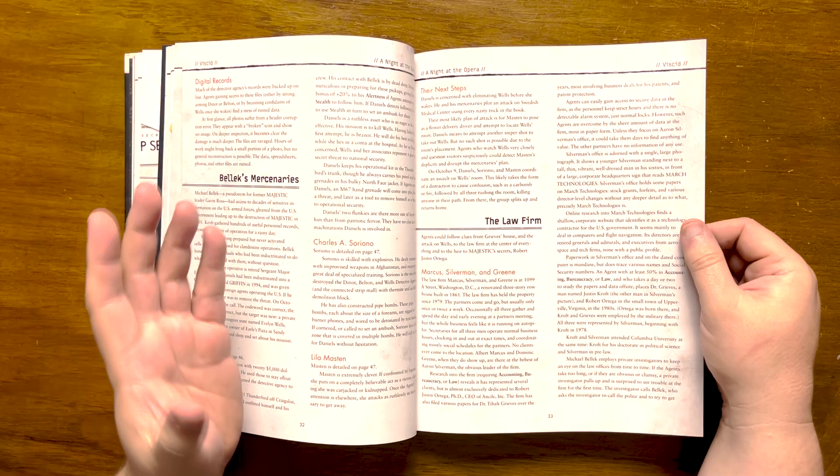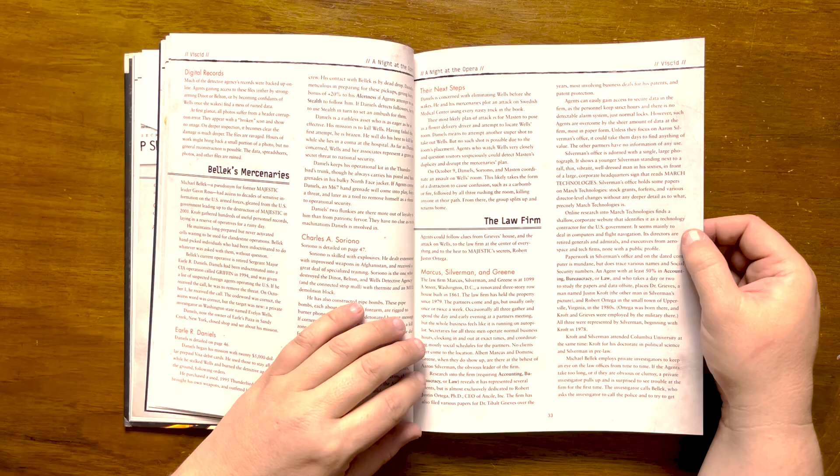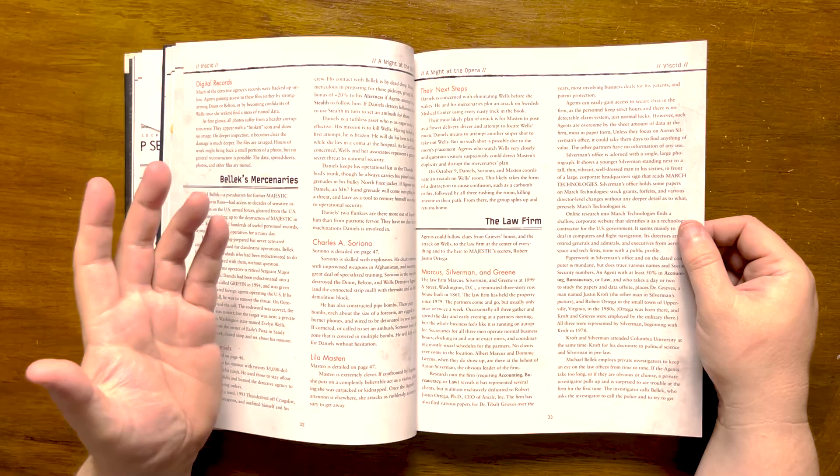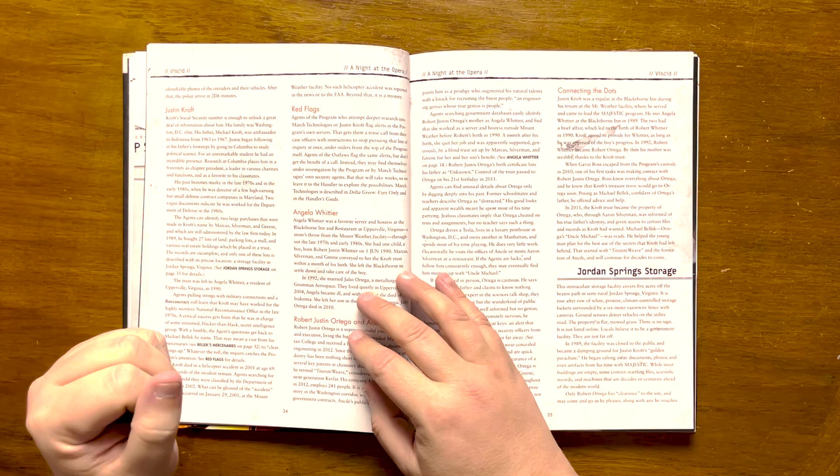They can find information here on Justin Croft. Croft's past is generally murky, but investigations should lead the agents towards a storage facility that he bought in Jordan Springs, Virginia. Their investigations, if not played correctly, could lead to a visit from his mercenaries. Any digging into his company, Marsh Technologies, will result in a tense call from their case officer to stop pursuing that line of inquiry.